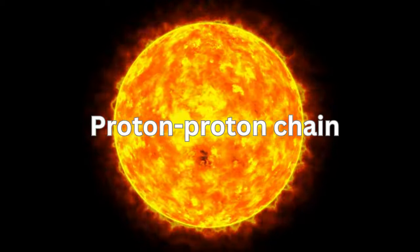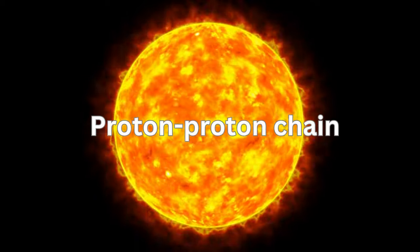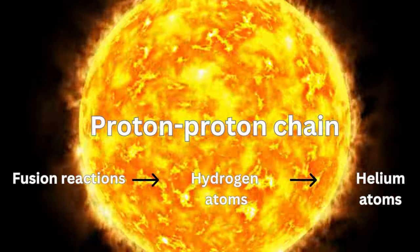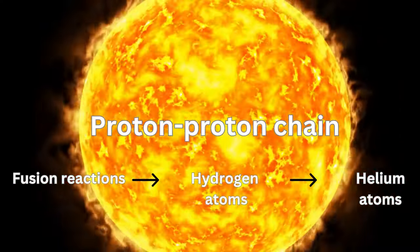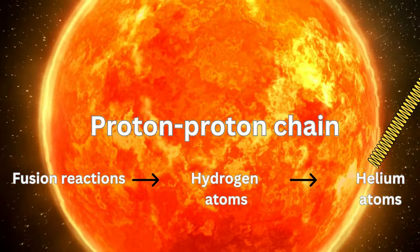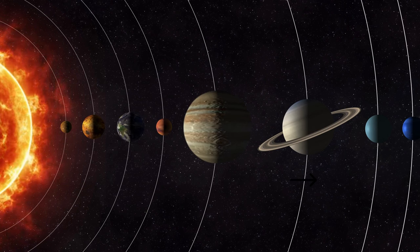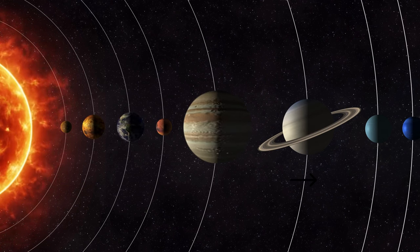The proton-proton chain in its entirety consists of a succession of fusion reactions that change hydrogen atoms into helium atoms, thus releasing energy in the form of gamma ray photons and other particles. Our solar system receives heat and light from the sun thanks to this amazing energy.